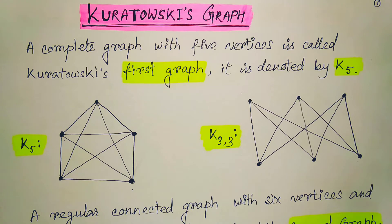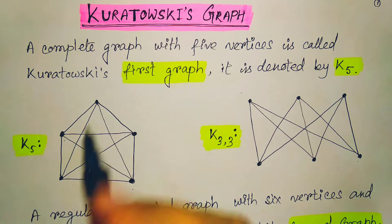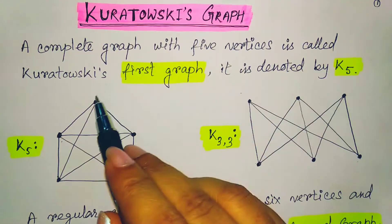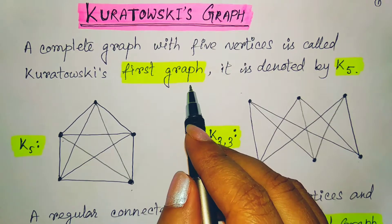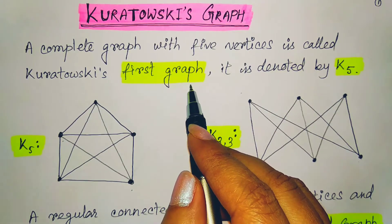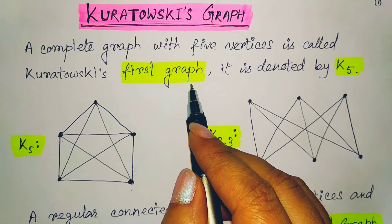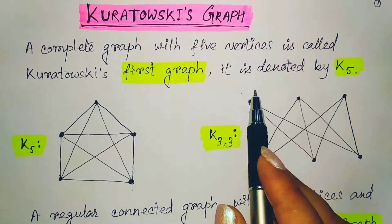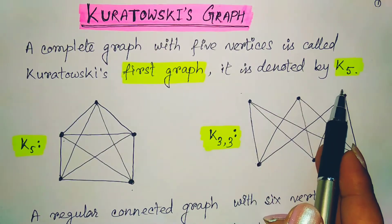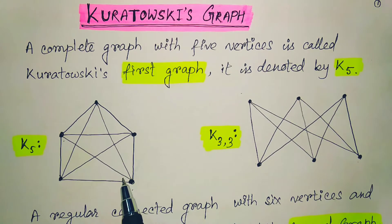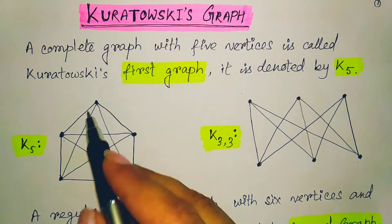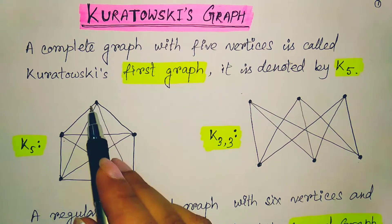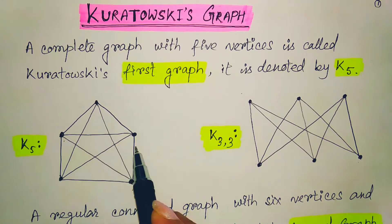So what is Kuratowski's graph? There are two types of Kuratowski's graph. Kuratowski's first graph is the complete graph with 5 vertices, that is K5. Here the 5 vertices are given and it is a complete graph because all the vertices have degree 4.